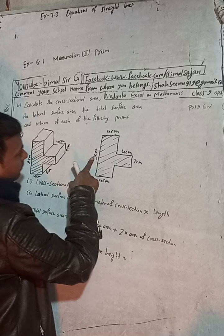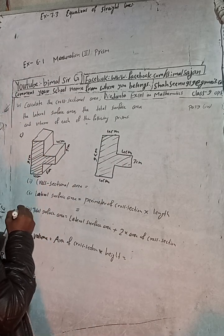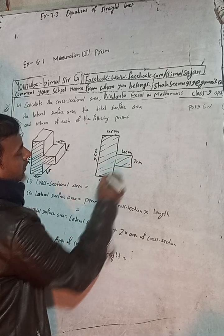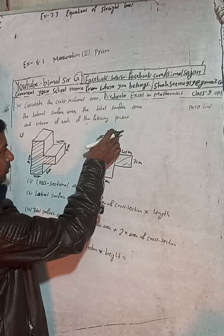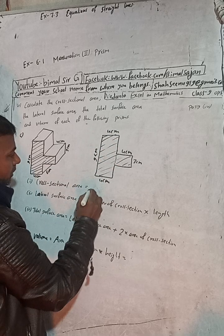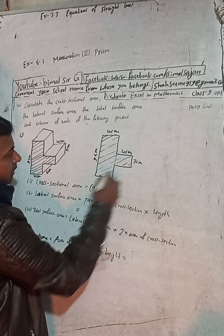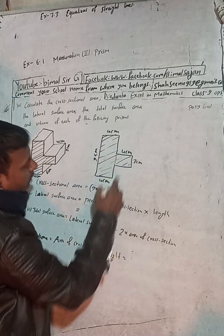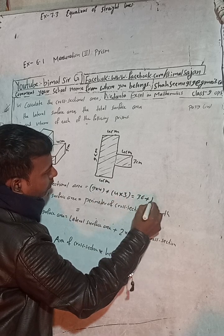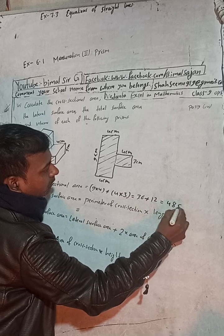This is 9 cm. For the cross-sectional area, if I join with a dotted line here I get two rectangles. This is a full rectangle, so its area is length 9 into 4 — that is 9 × 4. Plus this rectangle: area is length 4 into 3 — that is 4 × 3.